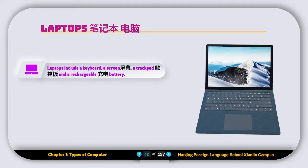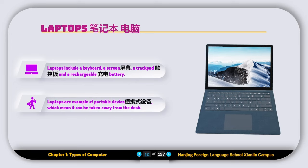The next type is the laptop. Laptops include a keyboard, a screen, a trackpad, and a rechargeable battery — all included inside. Laptops are an example of portable devices, which means they can be taken away from the desk.